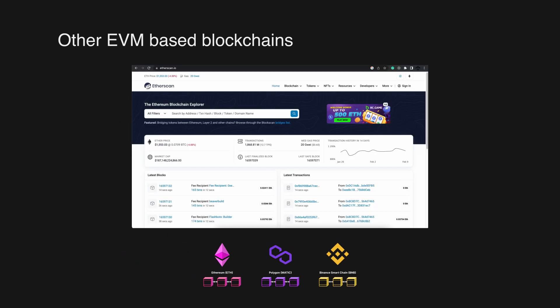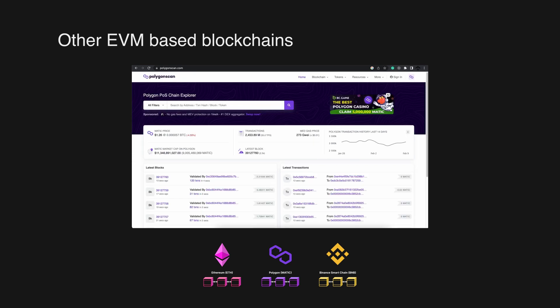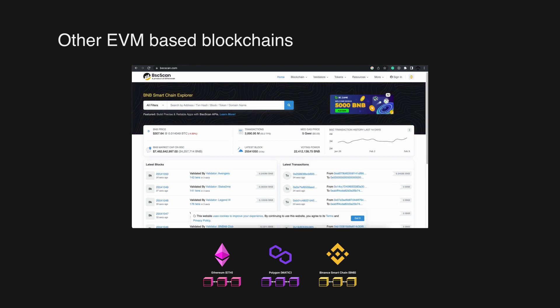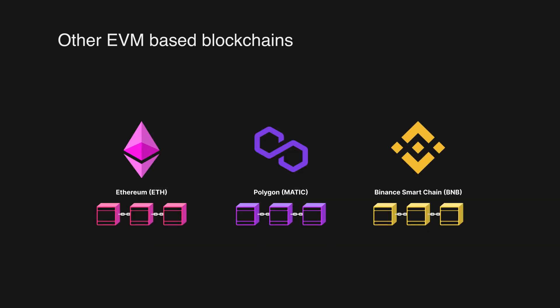Each blockchain also has its own blockchain explorer. So Etherscan is used for Ethereum, Polygon Scan can be used for Polygon, and Binance Smart Chain uses BSC Scan.